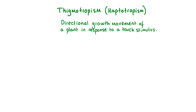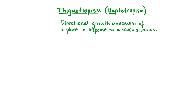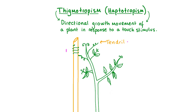Let's take a look at an example of a plant tropism in response to touch called thigmatropism, or sometimes known as haptotropism. Climbing plants like this garden pea plant have specialized structures called tendrils. Tendrils are slender structures which help support climbing plants by winding around objects that they come into contact with.